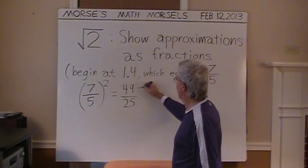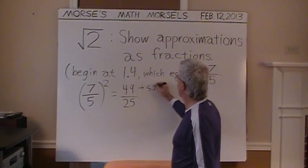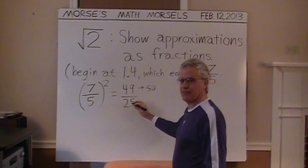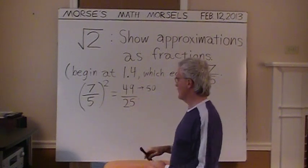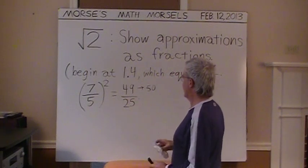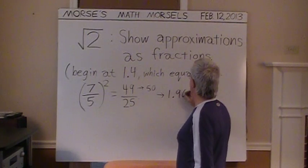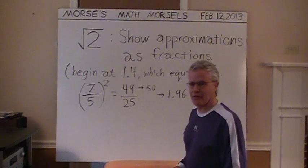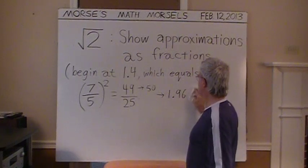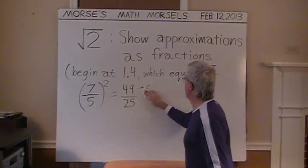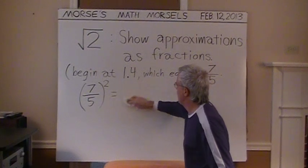If this 49 were a 50 instead, just one more, then it would be 50 over 25, which is exactly 2. Alas, not quite 2. In decimal form, this would be 1.96. Rather close to 2, but not 2 exactly. And it can never be 2 exactly.